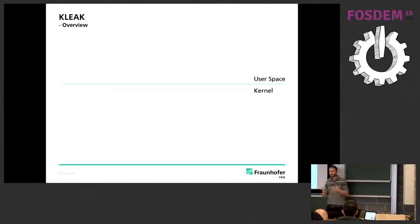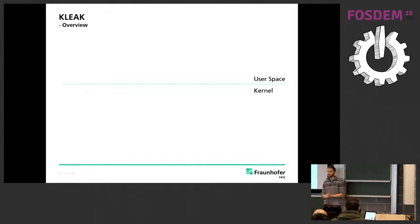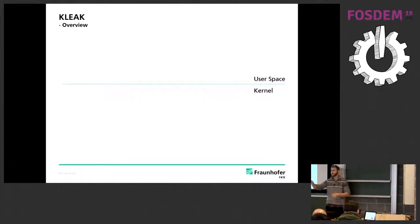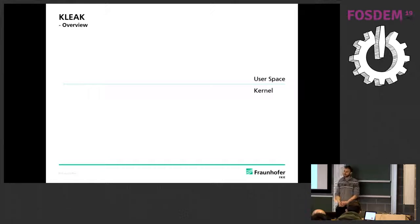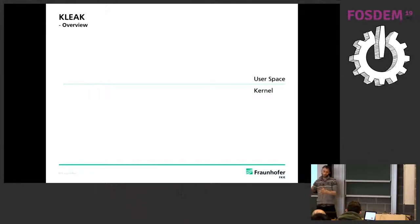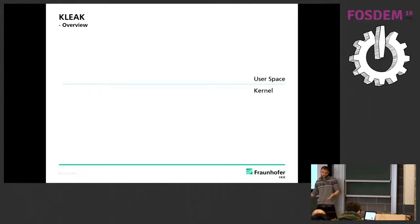K-Leak is an automatic approach to detect kernel memory disclosures, using a rudimentary form of taint tracking. We taint our memory sources like the kernel heap and stack. Then we let the tainted bytes travel through kernel space, and at data sinks — in our case copyout and copyout_string — we look at the buffers and search for certain marker bytes. If they're there, we've detected a kernel memory disclosure.